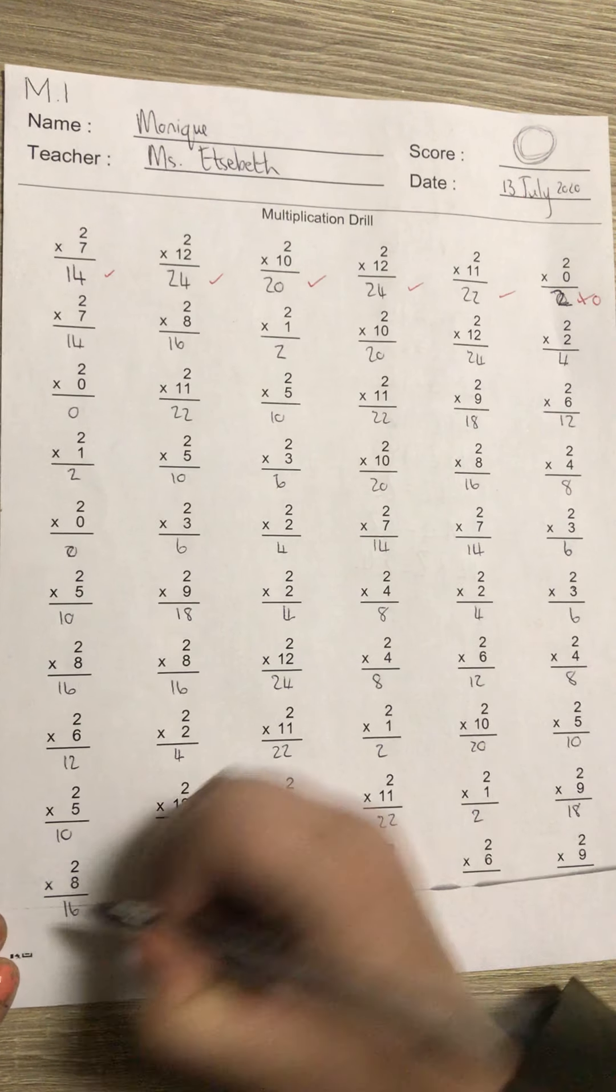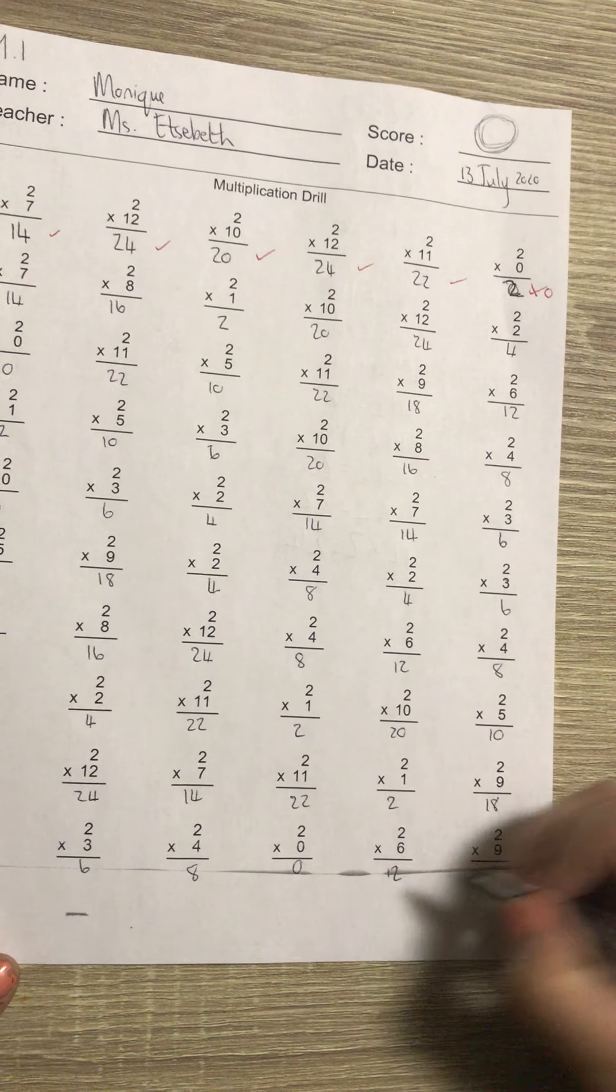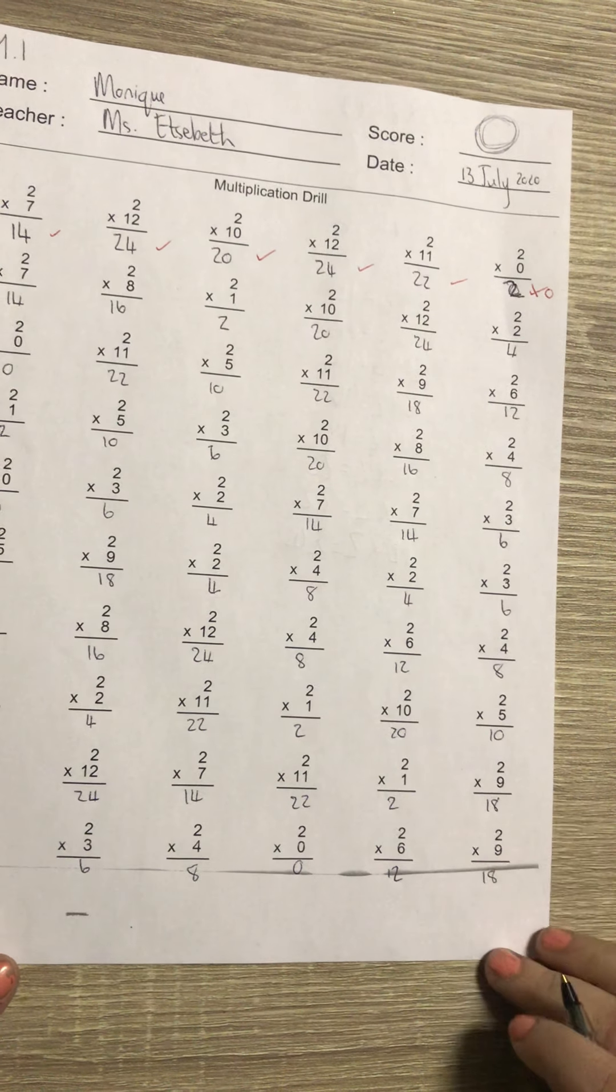Last row: two times eight is 16, two times three is six, two times four is eight, two times zero is zero, two times six is 12, and two times nine is 18.